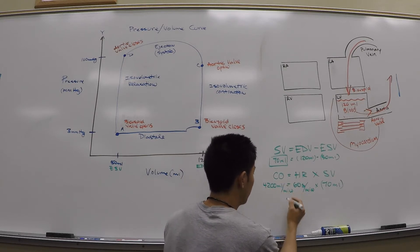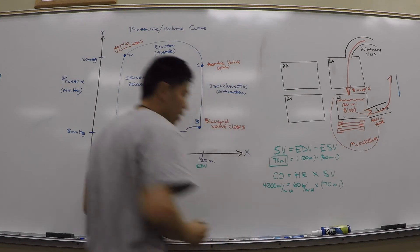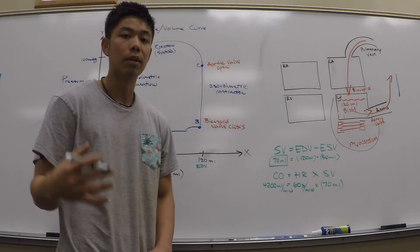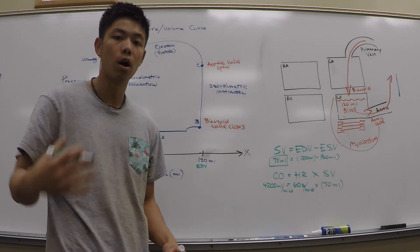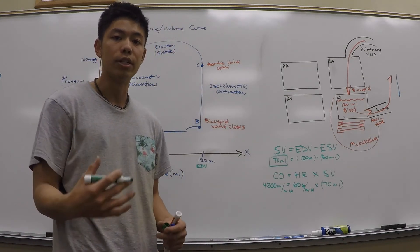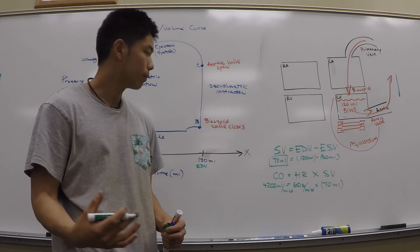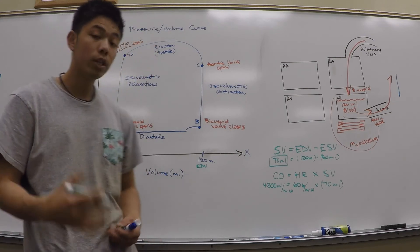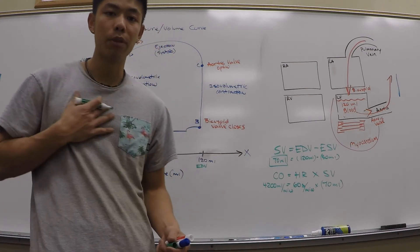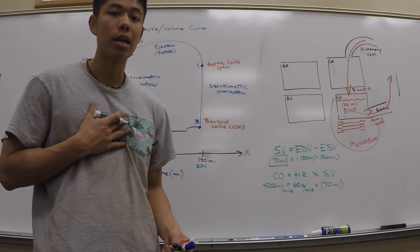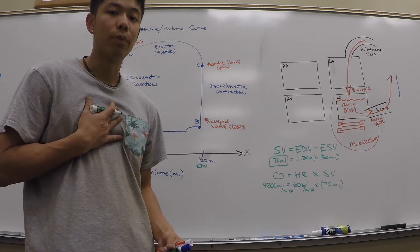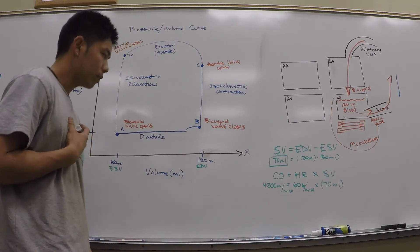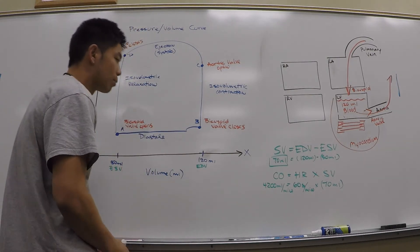So cardiac output equals 60 strokes per minute times 70 milliliters, which gives us 4,200 milliliters per minute. Cardiac output is the total amount of blood being pumped through our heart every single minute. 4,200 milliliters of blood pumped every minute — pretty cool.